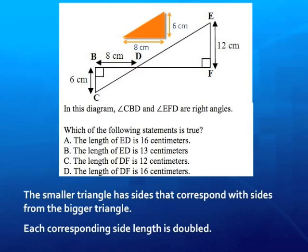Now we can easily see how the smaller triangle corresponds with the larger triangle. You can see that each corresponding side length is doubled. Now it's up to you to figure out which of those four choices is a true statement.